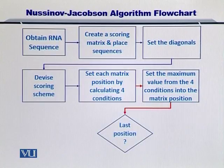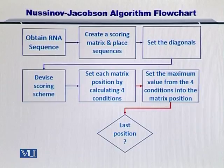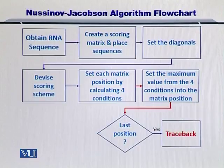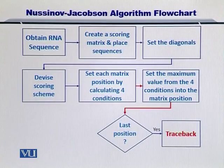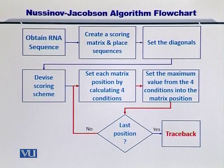That is not all. Once you have filled up a single position, you have to repeat this process over and over again until you fill all the matrix positions that are above the diagonal of the matrix. Once you finish all the positions, you can start with another step in the NJ algorithm — that is the traceback.